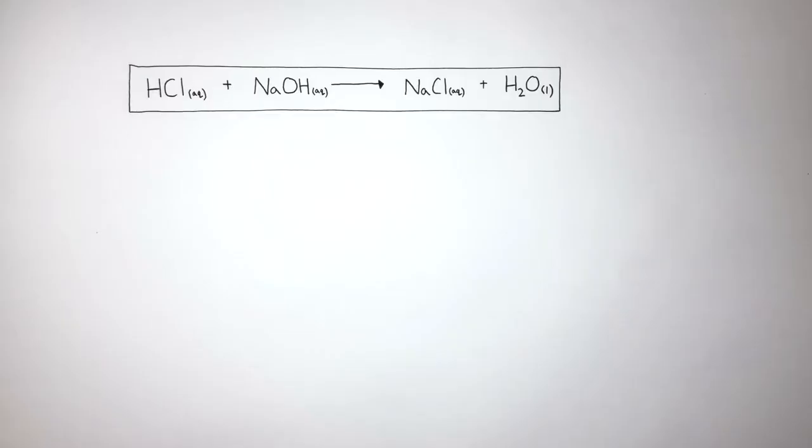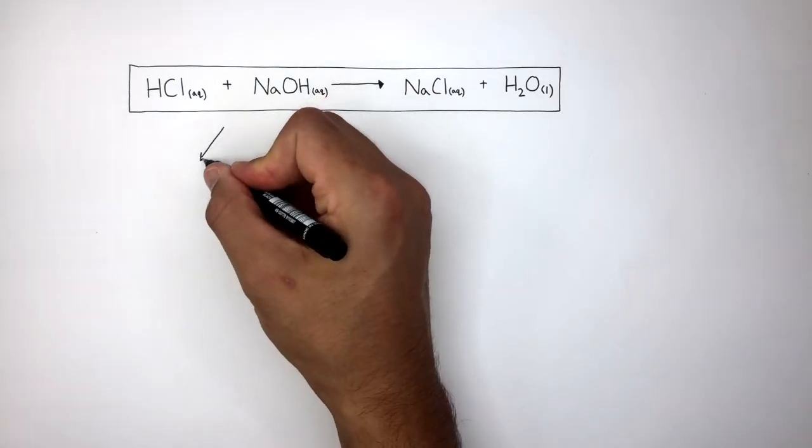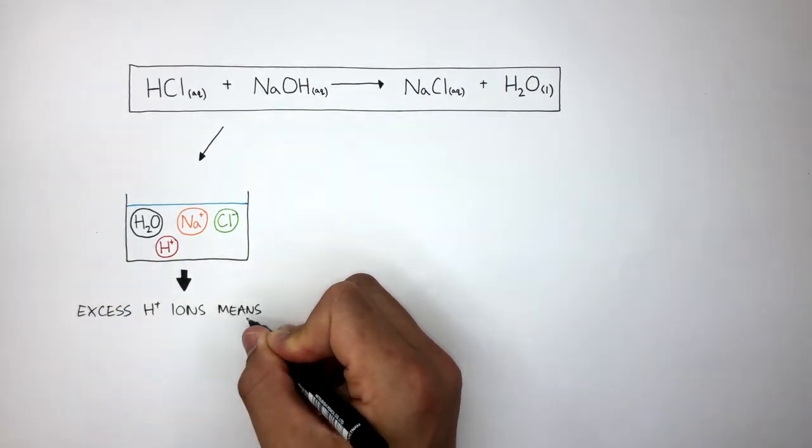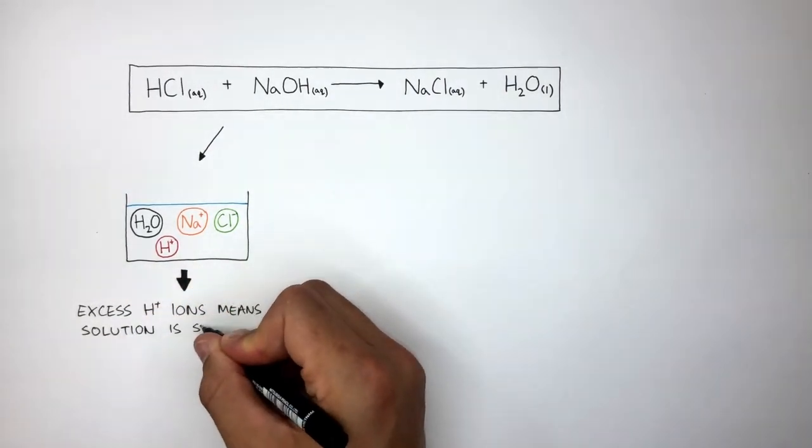Here we have a balanced symbol equation of the reaction we've just gone through, where hydrochloric acid reacts with sodium hydroxide to form sodium chloride and water. Let's say this reaction has taken place and after the reaction has finished in this beaker, we're left with water, sodium chloride solution, and excess hydrogen ions. This means the solution has not been completely neutralized. Excess hydrogen ions means the solution is still acidic.